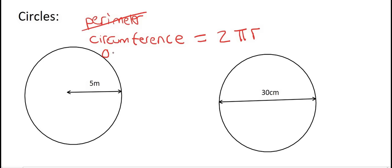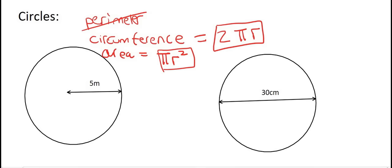To find the area of a circle, you're going to use pi r squared. A lot of students confuse these two formulas with each other. Remember: for circumference, the 2 is in the front — 2 pi r. For area, you put the 2 up at the top — pi r squared. Make sure you understand and remember that.